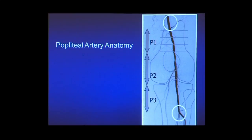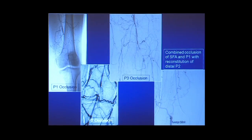The parlance that's becoming more common is to divide the popliteal into P1, P2, and P3 segments, with the P1 segment ending at the top of the patella, P2 at the joint, and P3 down to the tibial trifurcation. Whether these areas actually behave differently when treated we don't really know, but it will be useful information. Here's an example of a patient with a distal SFA P1 occlusion, a P2 occlusion right at the patellar level, and a P3 with reconstitution right where the anterior tibial starts.